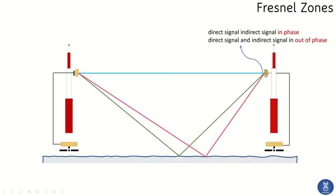At the receiving end, both the direct signal and the reflected signal will arrive. If both are in phase, the signals add up and you get more signal power. If both are out of phase or anti-phase, the signals cancel and theoretically the receiving antenna will get no signal.